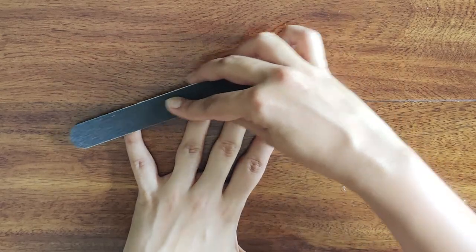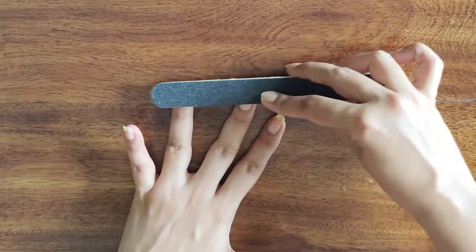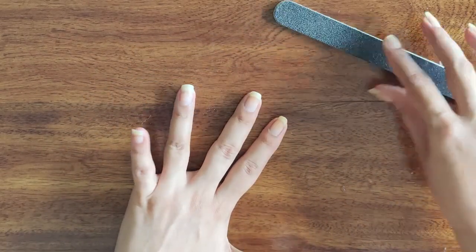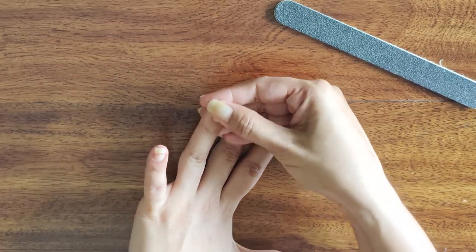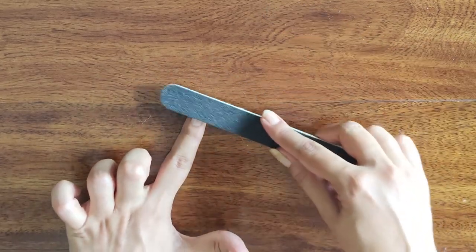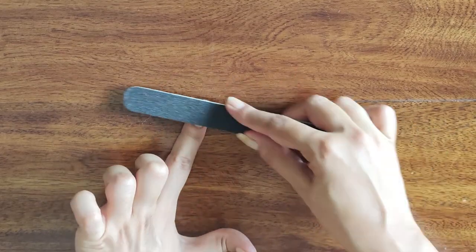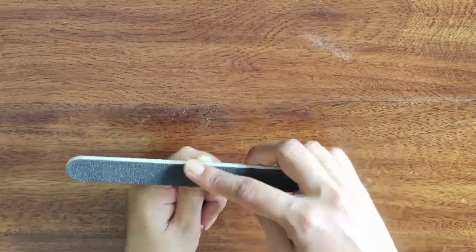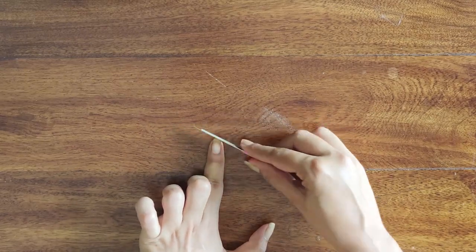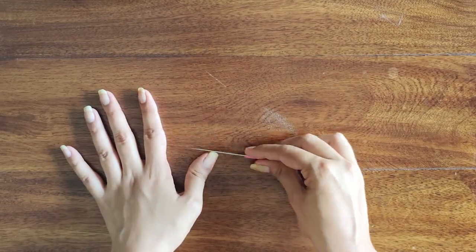Now I'm just going to buff down my nails ever so slightly just to get rid of a little bit of that discoloration. But I will only buff down a tiny bit because I don't want to weaken my nail bed too much. Then I'm just going to file them down once again.